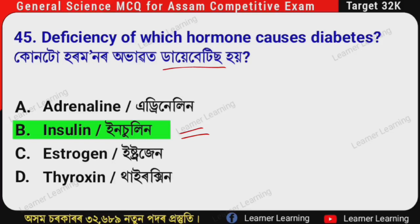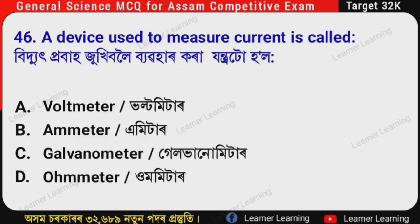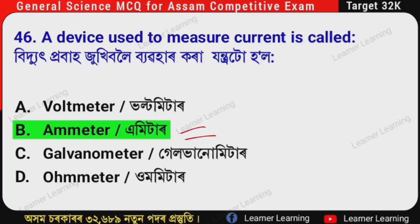It is a very important question. Next question: A device used to measure current is called — (Assamese: Vidudh prabha jukhi boloi bebhar kora jantro to holl?) The correct option is Option B — Ammeter. An ammeter is the device used to measure electric current.